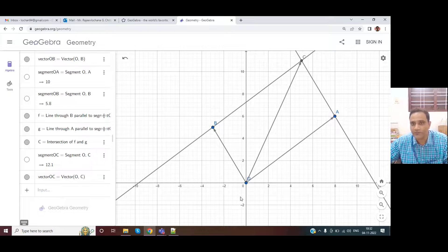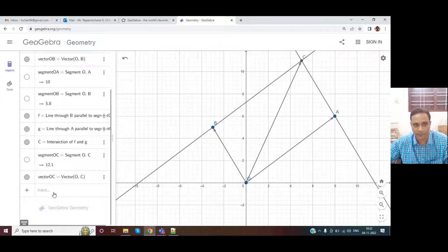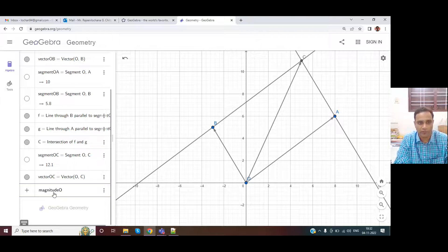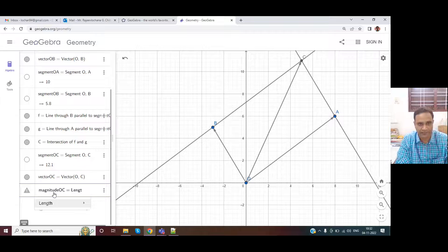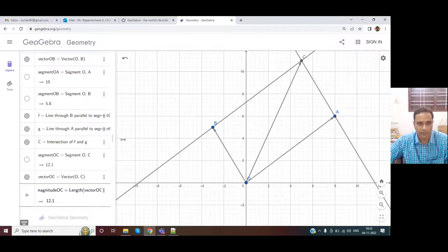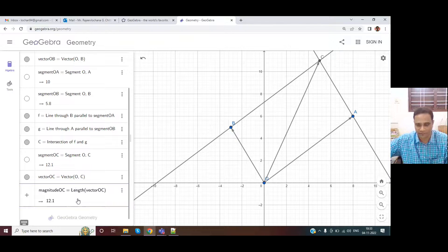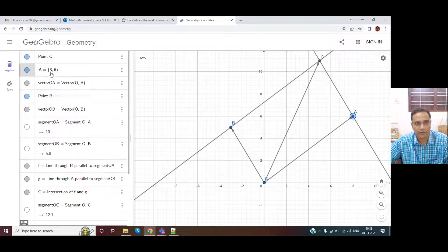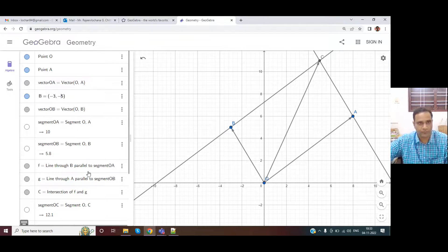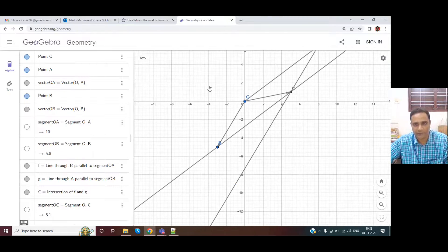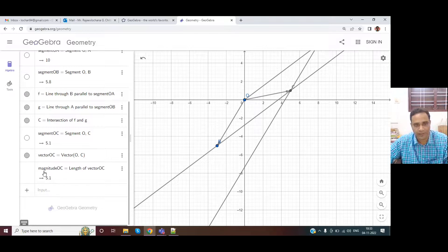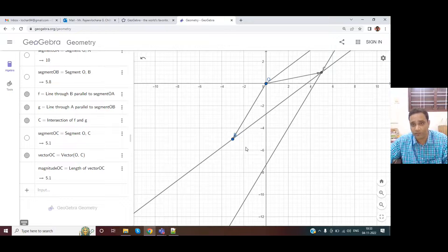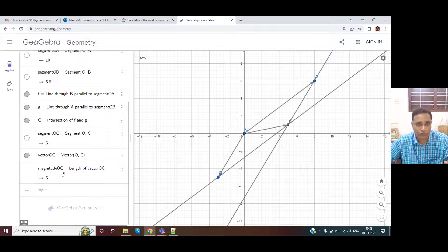Now, how do you find the length of this OC vector, vector OC magnitude of OC. There's a function called length and I can give the parameter OC. So that is the length magnitude OC is given. If I change the point, maybe B I'll change now. So point B went to the third coordinate. Then the length of the magnitude is again calculated based on whatever is a new geometry.